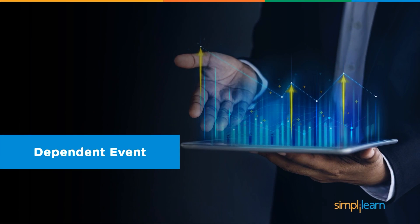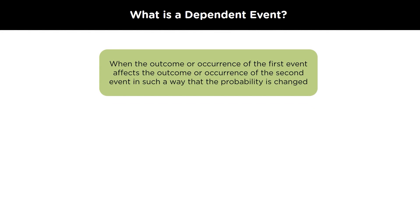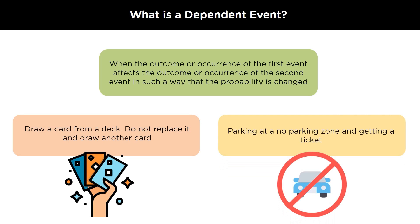Now, let's move on to dependent events. Two events are said to be dependent if the outcome of the first event affects the outcome of the second event so that the probability is changed. Let's understand this with the help of an example. Suppose you have a deck of cards — the probability of drawing a card from a deck of 52 cards is 1/52. Now, if you do not replace the card, the probability of drawing another card changes to 1/51. Another example is parking at a no-parking zone and getting a ticket. When you park at a no-parking zone, the probability of getting a ticket increases.